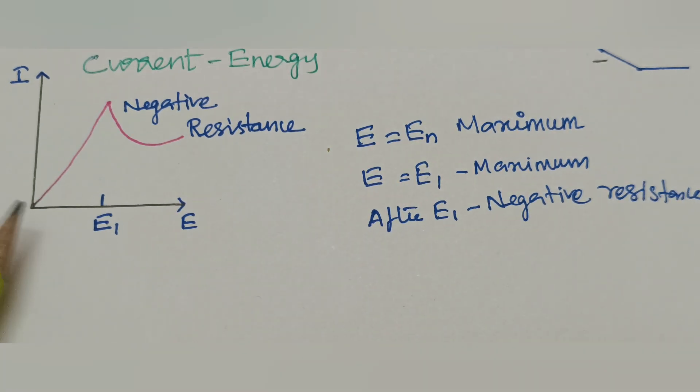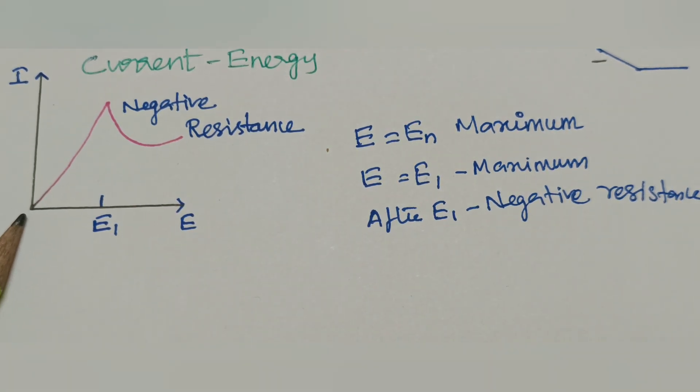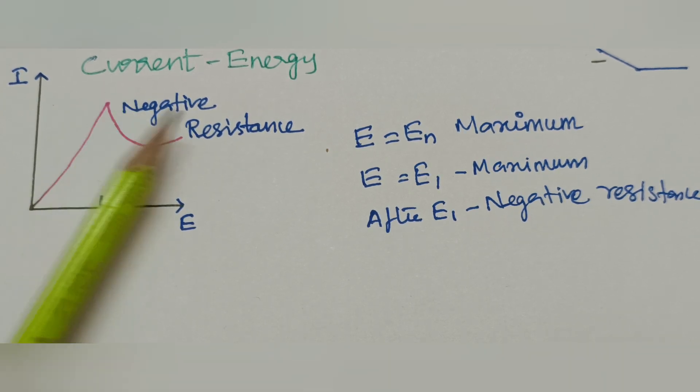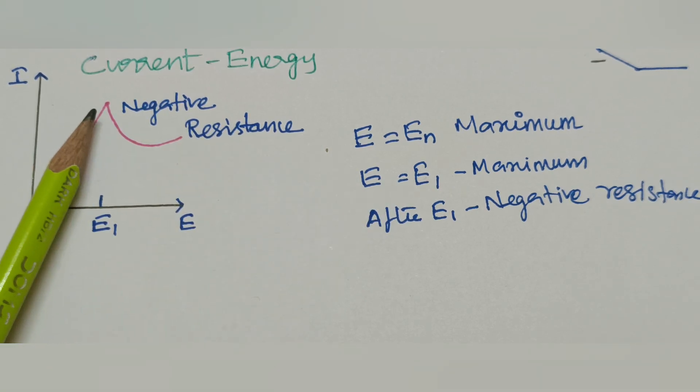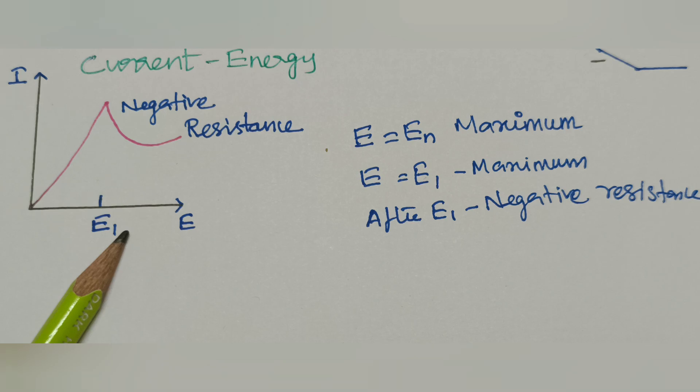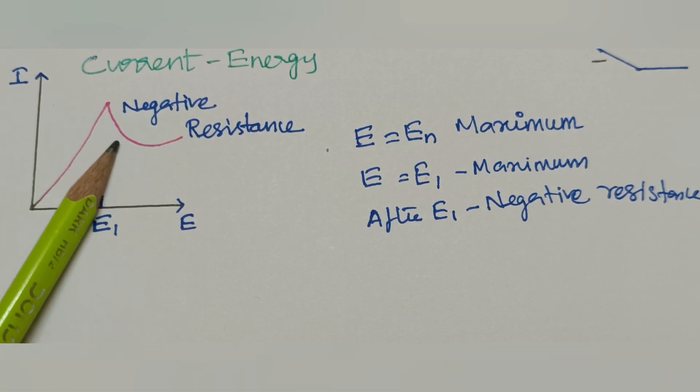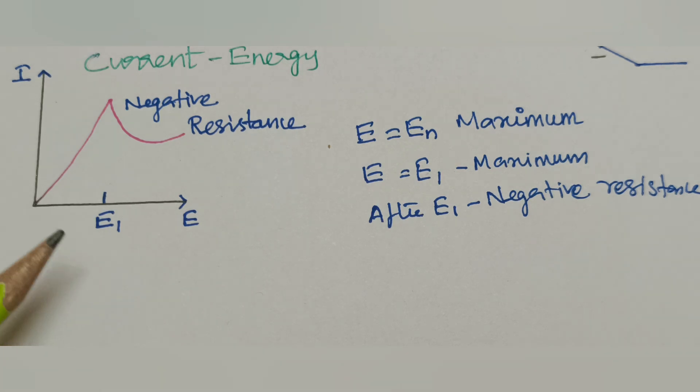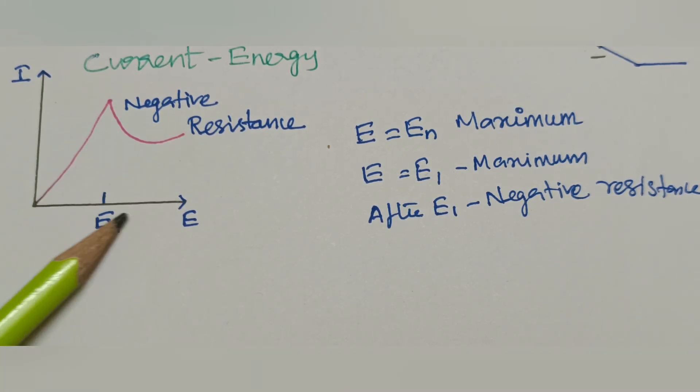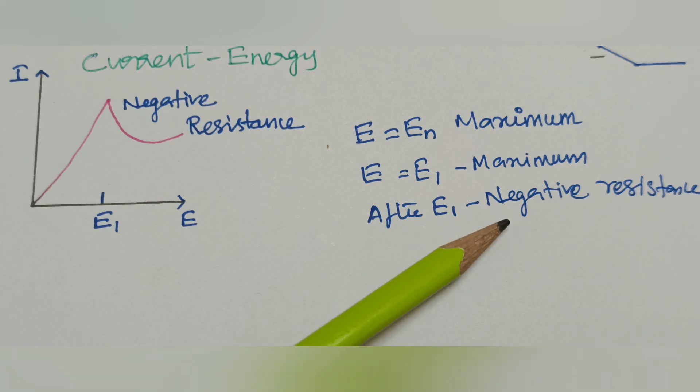Here, the energy E is increased, the tunneling will also increase. It reaches peak when E is equal to E1. After the point, further increasing the E, but the tunneling decreases. This decrease of current with an increasing bias is called negative resistance.